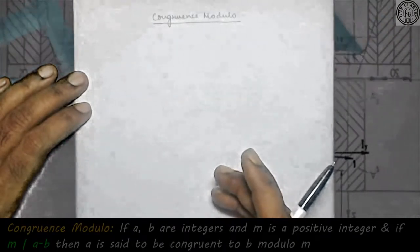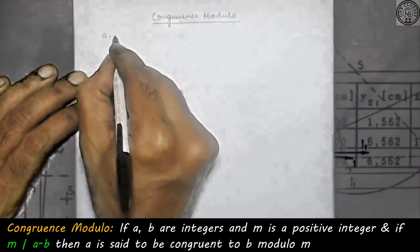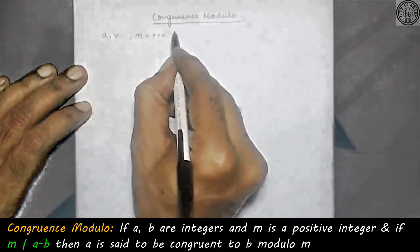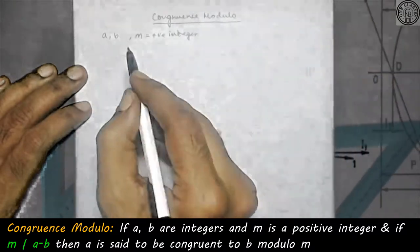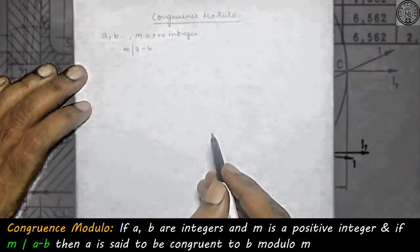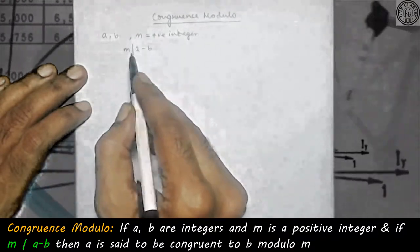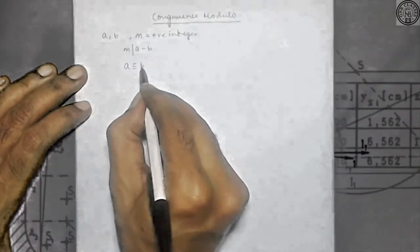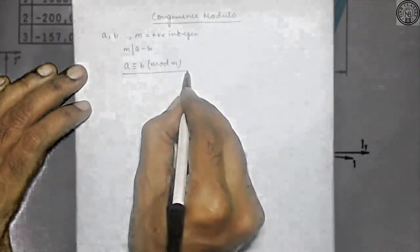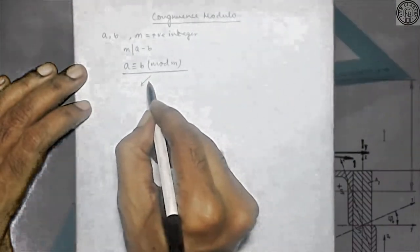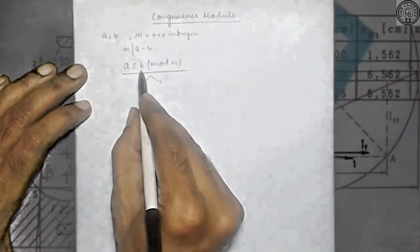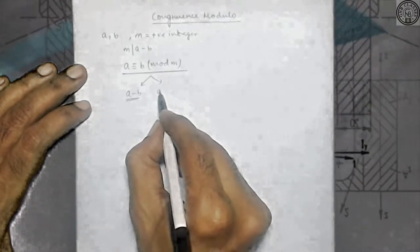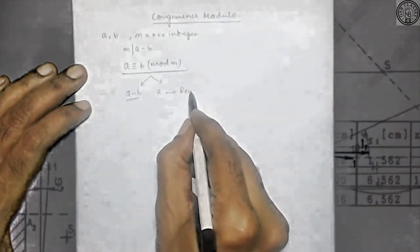First of all, we have to understand what is congruence modulo. This is the definition: if there are two integers a and b, and if m is a positive integer, and if m divides a minus b, then we say that a is congruent to b modulo m. From this notation, we can say two things: a minus b is completely divisible by m, or when a is divided by m, the remainder is b.